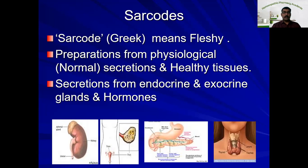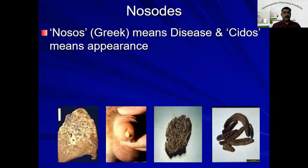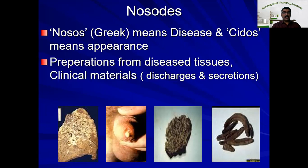The next important unique source of homeopathic drugs is nosodes. Like sarcodes, the word nosode originates from the Greek word nosos, which means disease, and pseudos means appearance. Unlike sarcodes, nosodes are preparations of drugs from diseased tissues and clinical materials like discharges or excretions, diseased secretions like pus, sputum, or any secretions from diseased organs. Sarcode is from healthy secretion and healthy parts of the body, while nosode is from diseased secretions, diseased excretions, and diseased parts of the body.